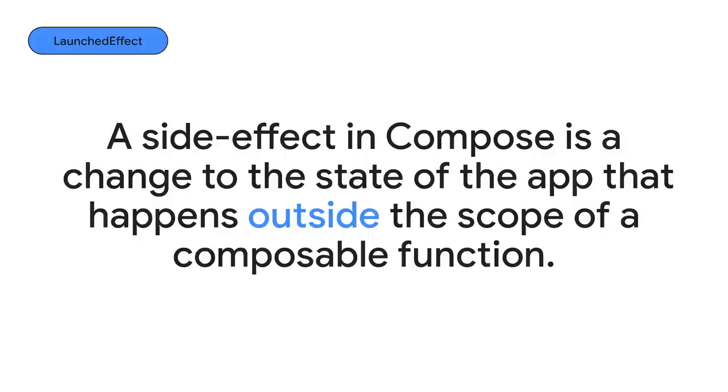In general, a side effect is a change to the state of the app. When talking about side effects in Compose, we are referring to invoking side effects from a composable and altering the state of the app outside the scope of that composable function. For example, opening a new screen when the user taps on a button, showing a message when the app doesn't have internet connection, sending analytics events, or calling the network — like it's the case for this section of the codelab.